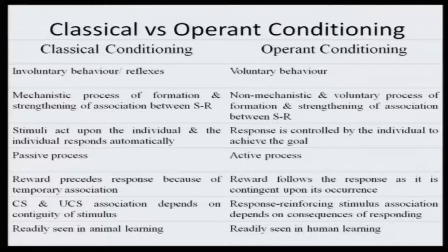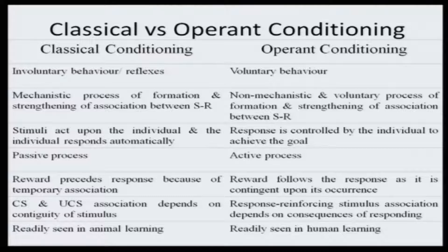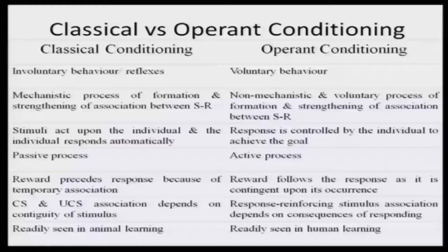In classical conditioning, it is a mechanistic process of formation and strengthening of the stimulus-response (SR) association. Whereas in the case of operant conditioning, the SR association formation and strengthening is non-mechanistic and basically a voluntary process. You want the aversive stimulus to be removed or you want the reward to be given, and therefore you give a desired type of response. It is voluntary and non-mechanistic.